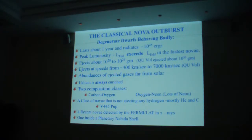And there are two composition classes which may relate to some of the things that have been talked about over the last few days. One is carbon oxygen, where we think the outburst occurs on a carbon oxygen white dwarf. But there's also another class, oxygen neon, where they eject lots of neon. In some cases, 20 to 30 percent of the ejected material is neon. And those must occur on stars that were very much more massive.